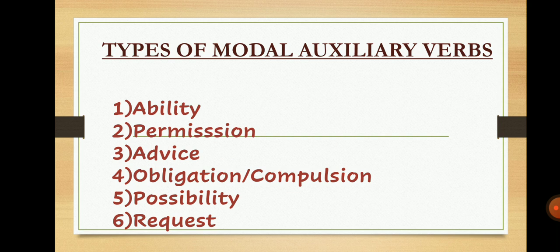Now we will study the types of modal auxiliary verbs. There are six types: ability, permission, advice, obligation or compulsion, possibility, and request. We will study these six types one by one with examples.